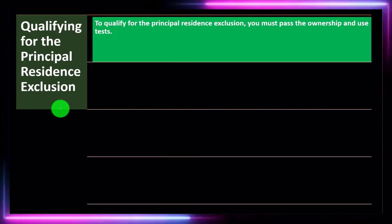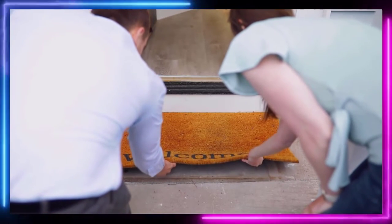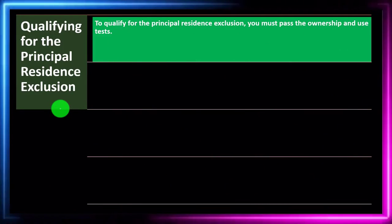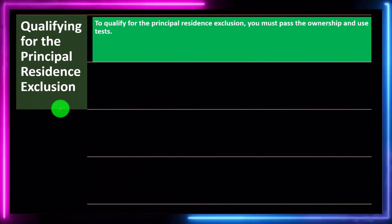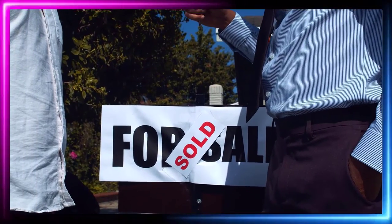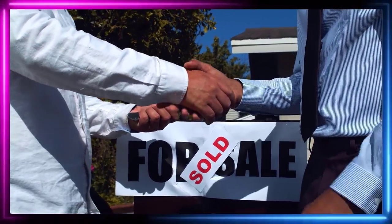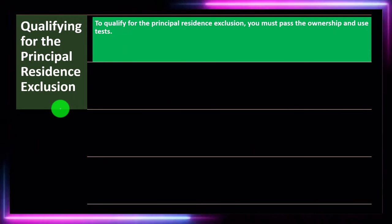Qualifying for the Principal Residence Exclusion: we're talking about a home ownership situation and the selling of the home, which often raises concerns because you're going to get money for the sale of the home and you might have to include that in income. If it has to be included in income for income tax purposes in the United States, then it could have tax consequences. There could be an exclusion if it was a principal residence. When you make the sale of the home, the general calculation of taxable income would generally be not the amount you're receiving but the amount received minus the adjusted basis, which includes the cost and improvements.